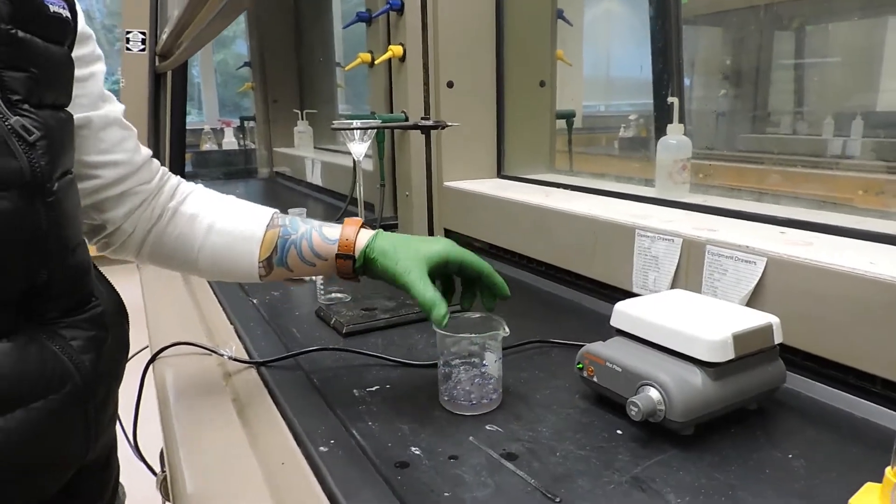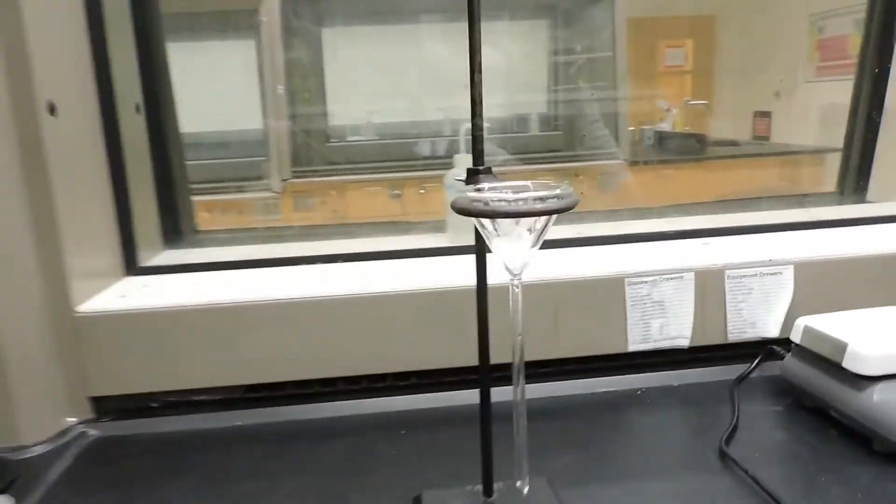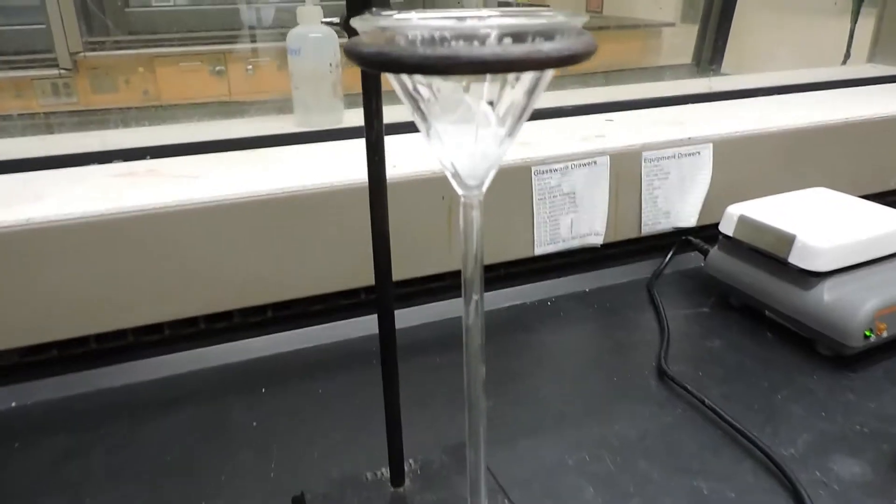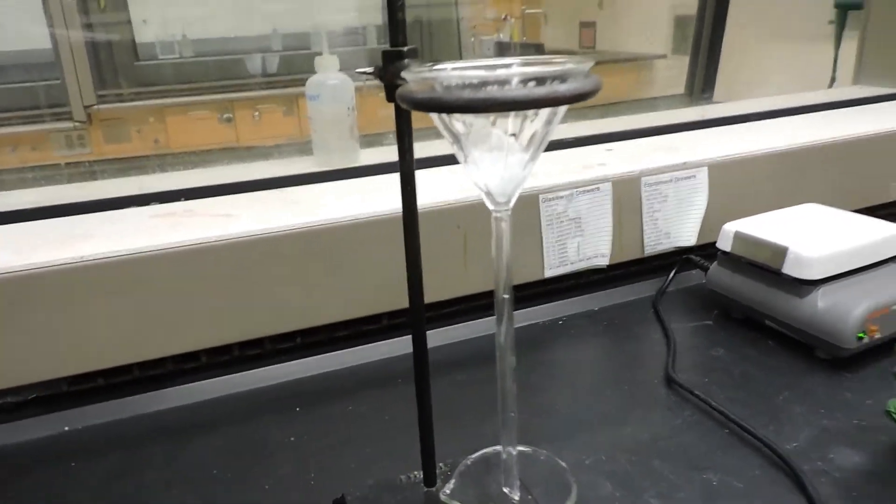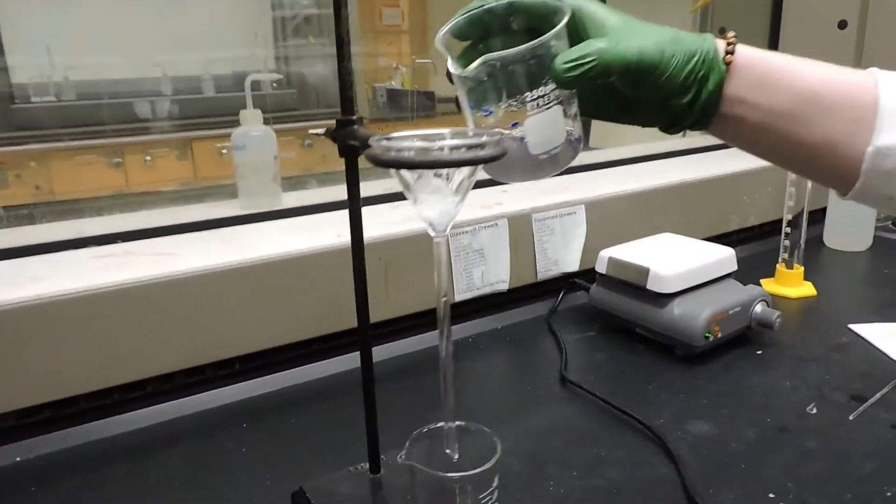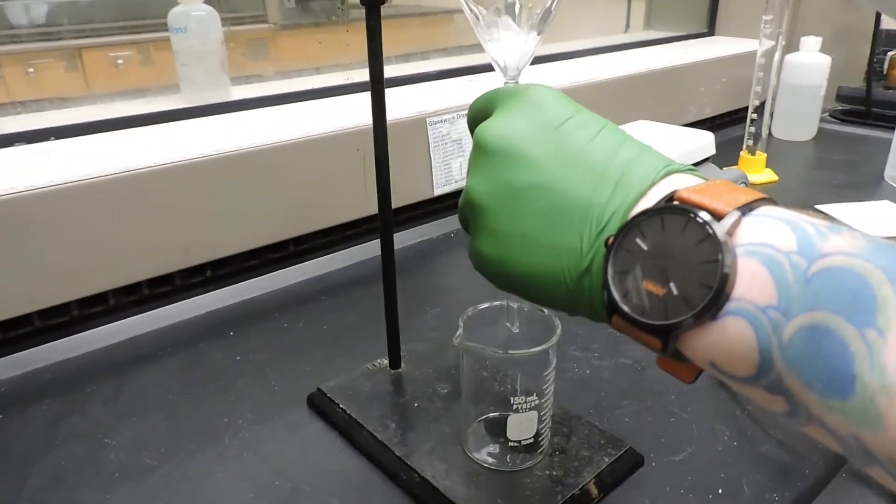Now we have set up a funnel in an iron ring with some glass wool inside to filter our mixture, and we're going to do that into a 150 milliliter beaker.